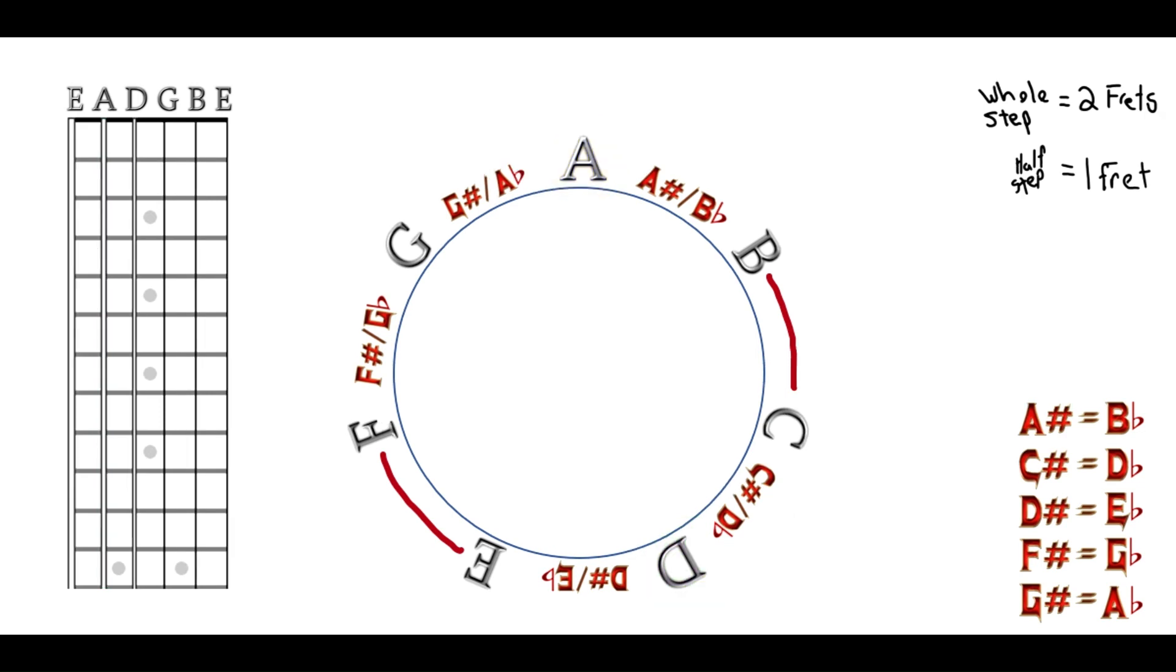Now let's try that one more time. This time on the G string, let's figure out what note fret 4 is. Starting on the G string as 0, fret 1 is G sharp or A flat, fret 2 is A, fret 3 is A sharp or B flat, and fret 4 is B.